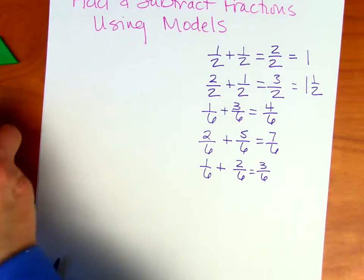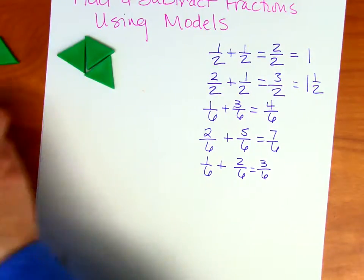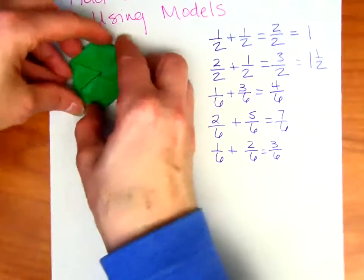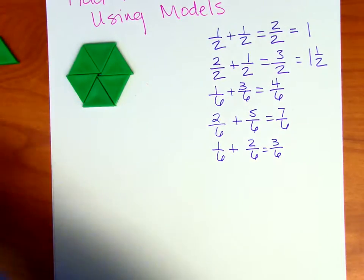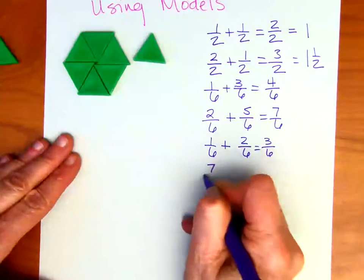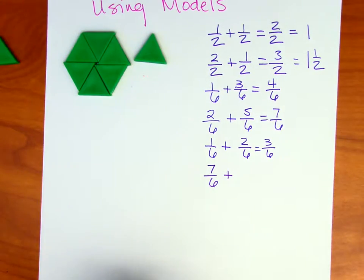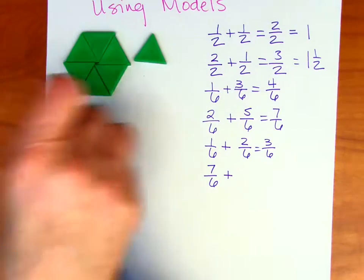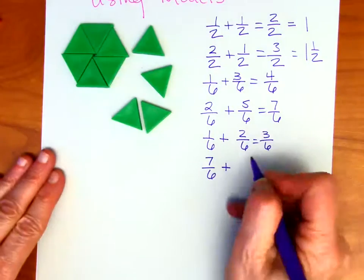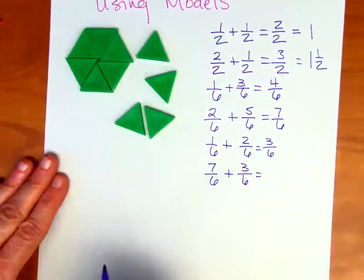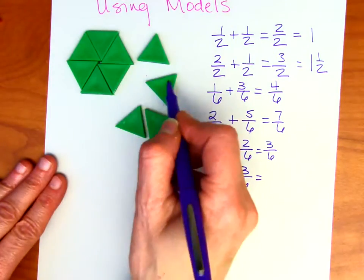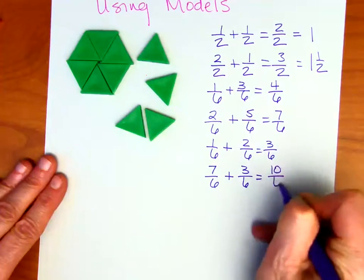Let's do another. Let's say we have seven-sixths — we could say this represents one and one-sixth, but let's just call that seven-sixths. And we're going to add to that three more sixths — three-sixths. So how many sixths do we have? Well, this is six, seven, eight, nine, ten. We have ten-sixths.